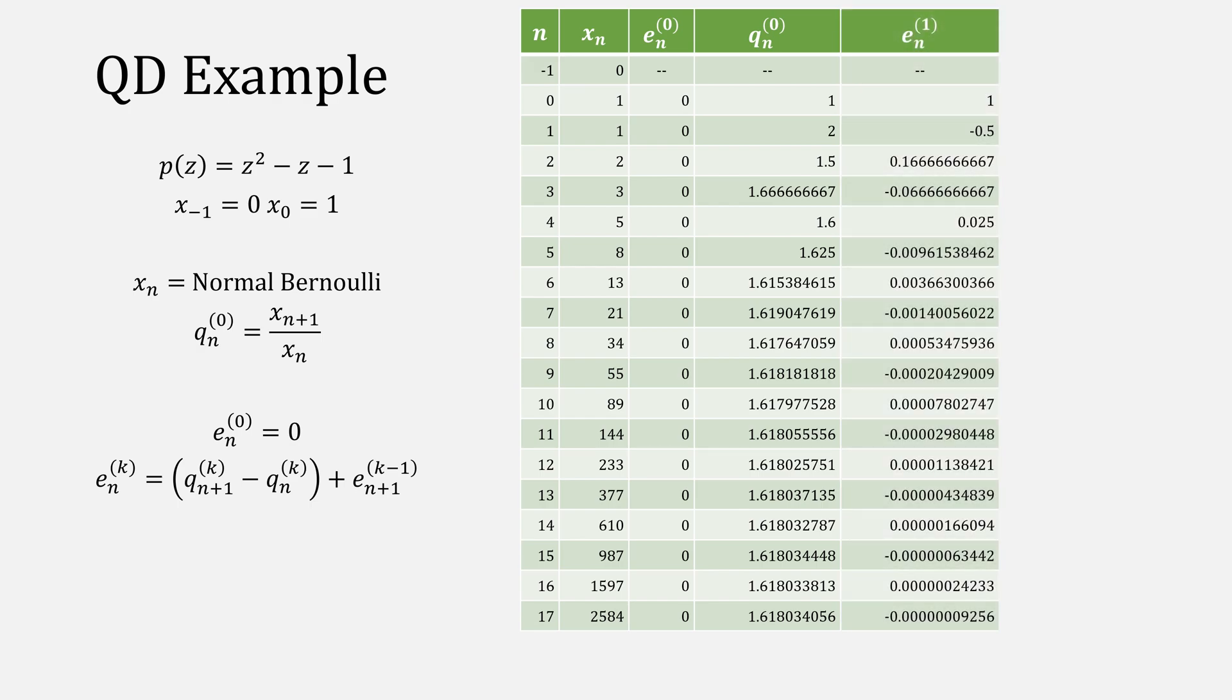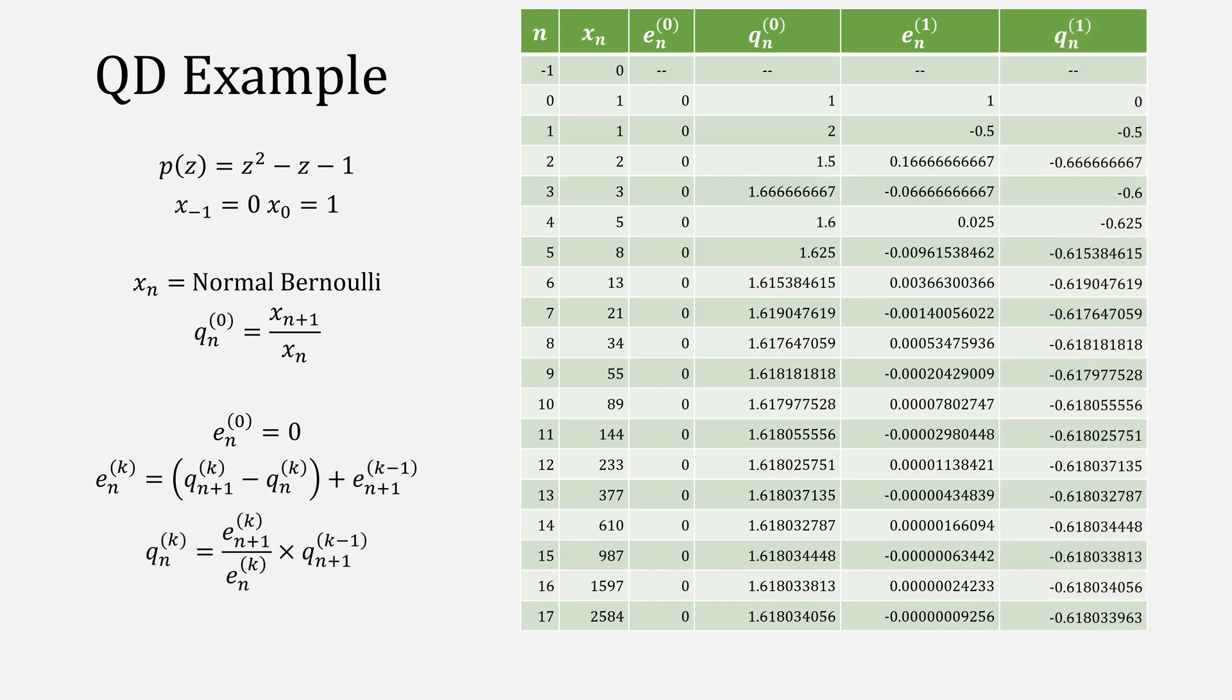Then use this equation to compute our next column of q's. It has found both of our roots of 1.618 and negative 0.618. Of course, if you actually kept iterating, it ends up finding a value of 0. Huh.